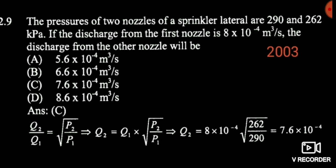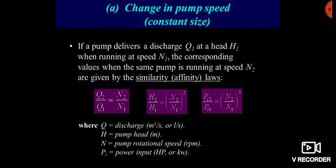So we simply put the speed value in place of discharge and get the answer. H2 by H1 equals (N2 by N1) whole squared, and N2 by N1 is directly proportional to Q2 by Q1. Therefore H2 by H1 is proportional to (Q2 by Q1) squared. Similarly, P2 by P1 is proportional to (Q2 by Q1) to the power 3.